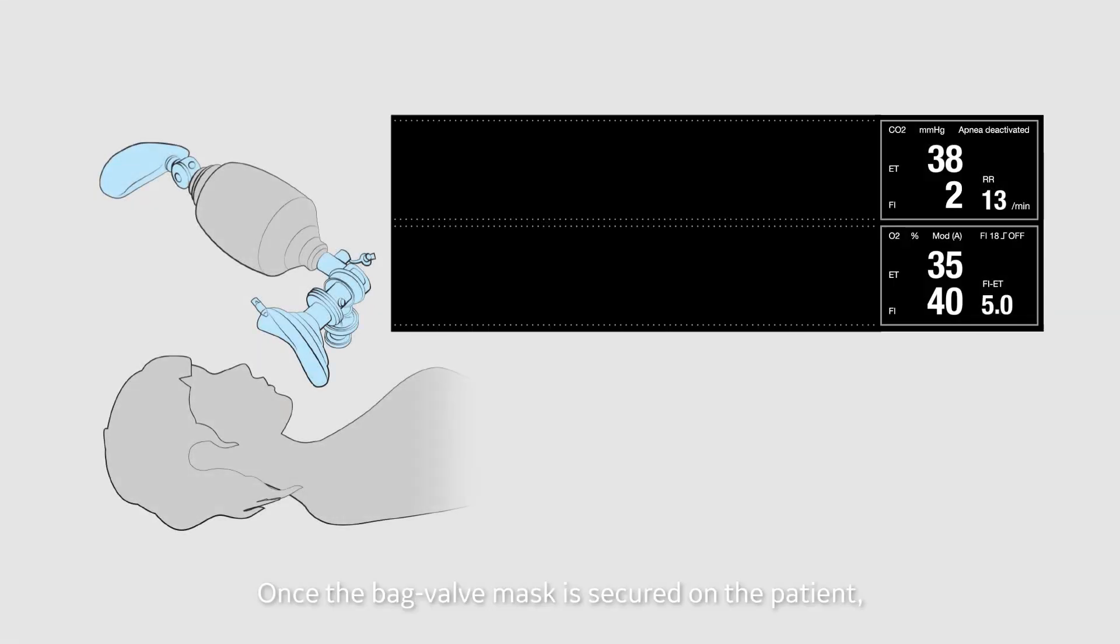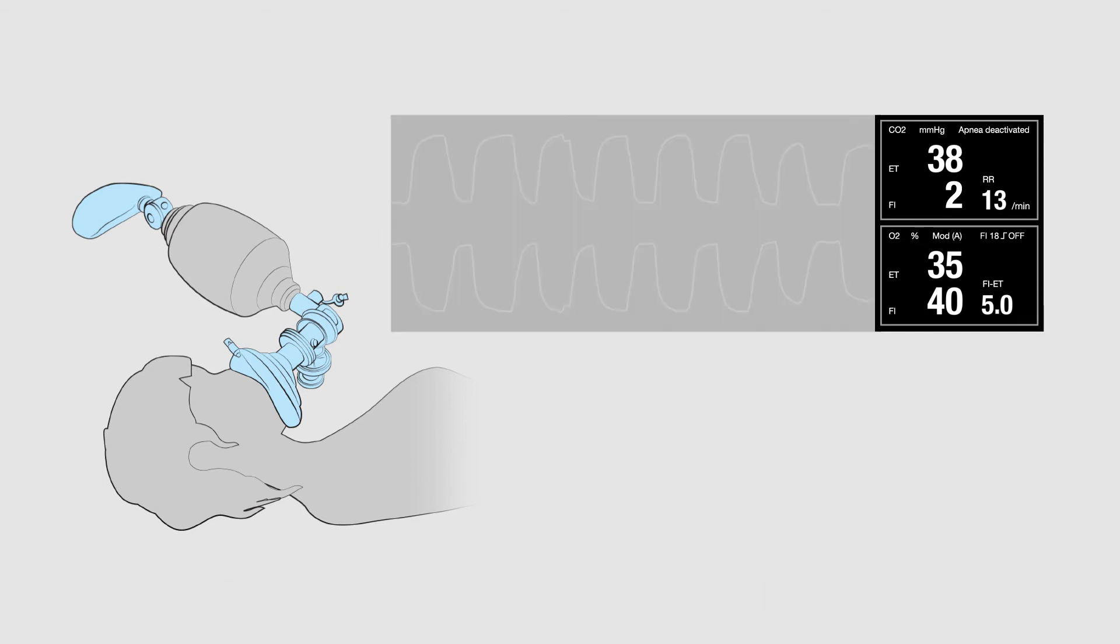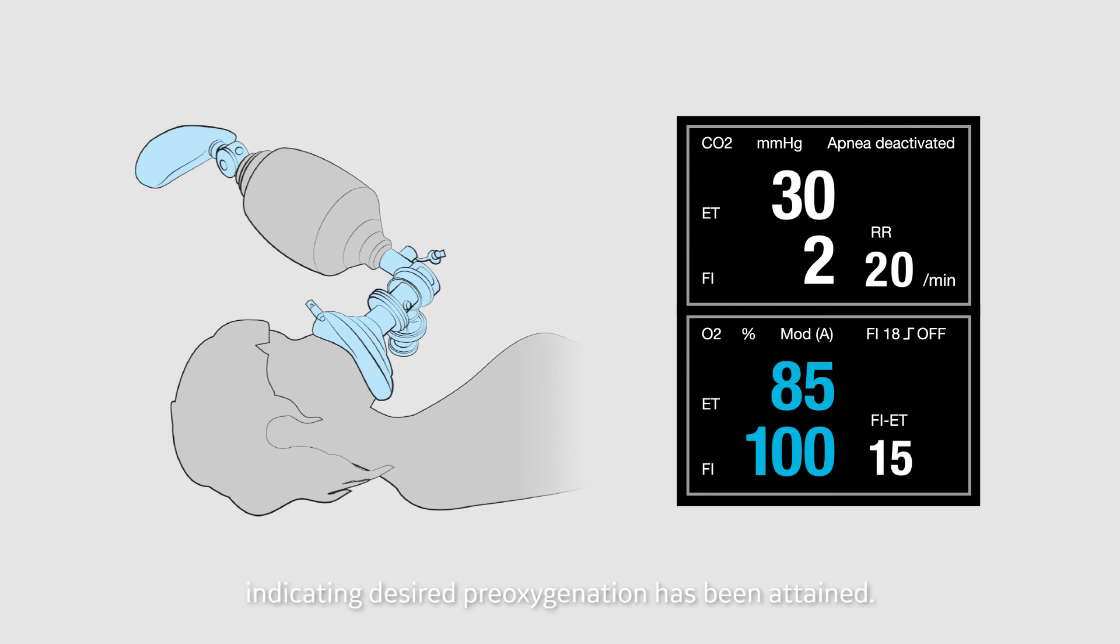Once the bag valve mask is secured on the patient, notice how the end-tidal oxygen and carbon dioxide will change from 35 and 8 respectively. Oxygen will be delivered at an FiO2 of 100% and note in the bottom screen where the ETO2 now reads 85% indicating desired pre-oxygenation has been attained.